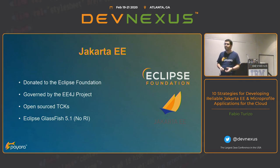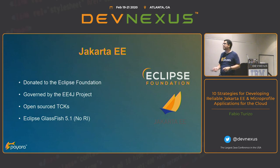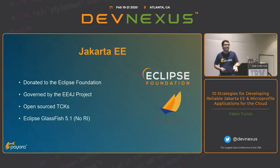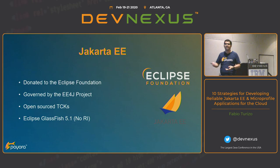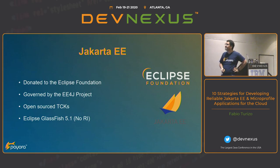However, Oracle was kind enough to donate the entire technology — not the IP, but the technology and part of the trademark — to the Eclipse Foundation under the Jakarta EE name. The name 'Jakarta' was kindly donated by the Apache Foundation; it was an old project — I think it was a web server of some capacity — and they simply said, 'We have this name here, would you like to take it? It's kind of relatable to developers of the old school.' And that's how we ended up with the name.